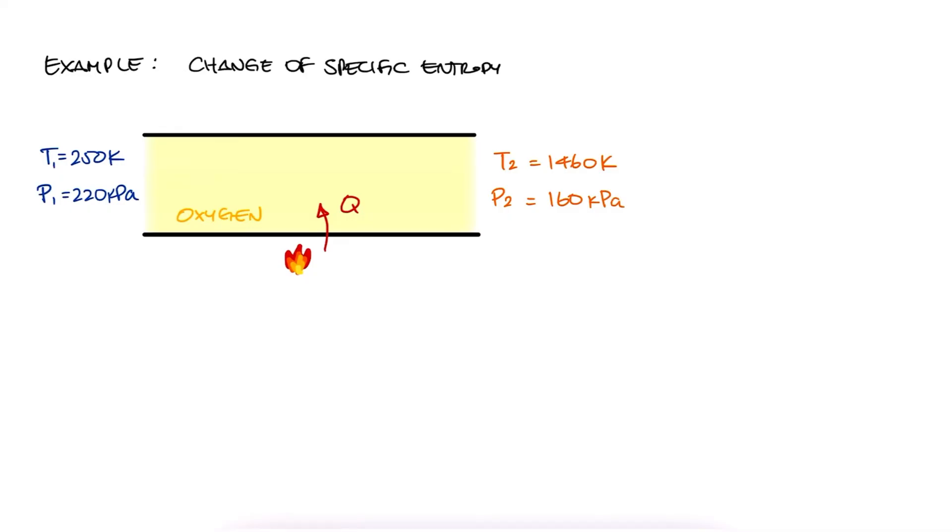Oxygen travels through a pipe as it's heated from 250 kelvin and 220 kilopascals to 1460 kelvin and 160 kilopascals. What is the change of specific entropy for the oxygen? As usual, try to solve this problem yourself before watching this solution.